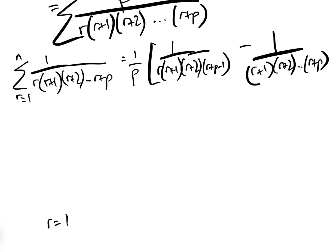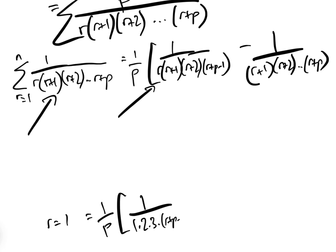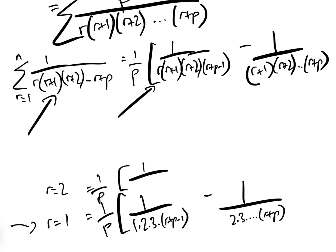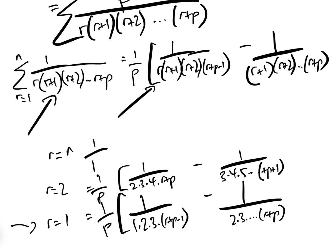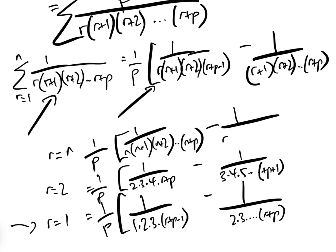Let's put in the terms. For r=1, the first term is 1/p times 1 over (1×2×3×···×(r+p−1)) minus 1 over (2×3×···×(r+p)). For r=2, it's 1/p times 1 over (2×3×4×···×(r+p−1)) minus 1 over (3×4×5×···×(r+p+1)). All the way up to r=n, we get 1/p times 1 over (n(n+1)···(n+p−1)) minus 1 over (n+1)(n+2)···(n+p).